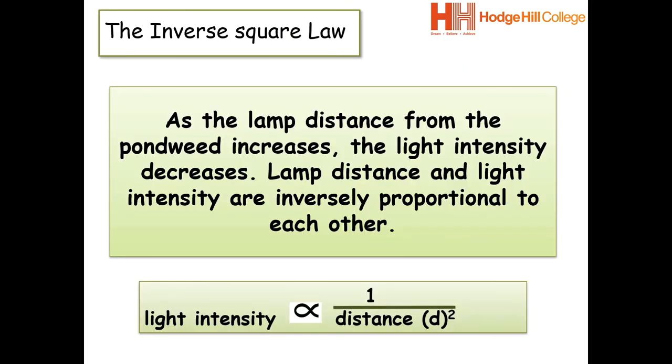This part is important for those of you who are doing higher tier. As we stated previously, as the lamp distance from the pondweed increases, the light intensity decreases. Now, this links into something called the inverse square law, which states that lamp distance and light intensity are actually inversely proportional to each other. So it can be represented by this formula, which shows light intensity. This is the proportional sign and it's proportional to one divided by distance squared.